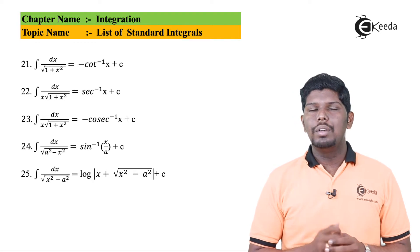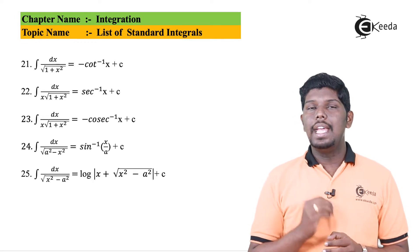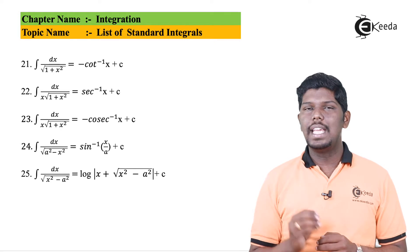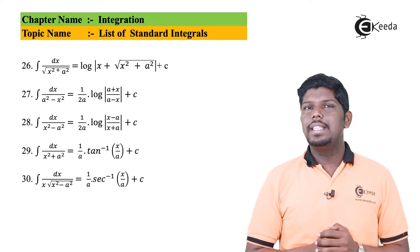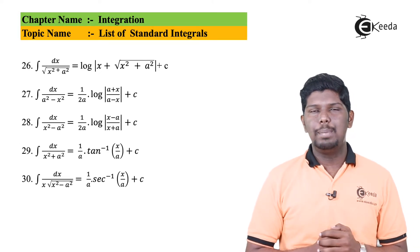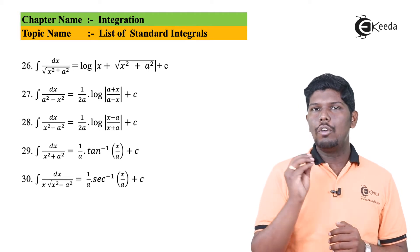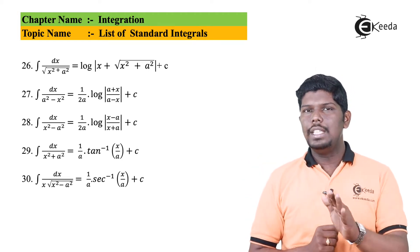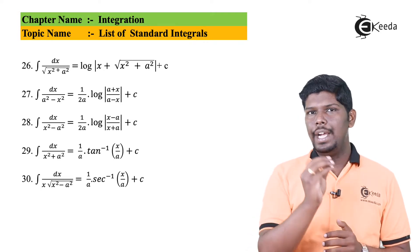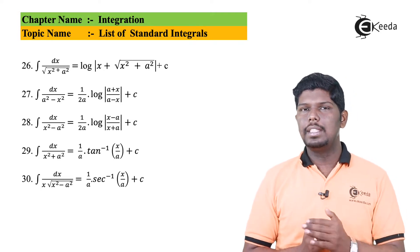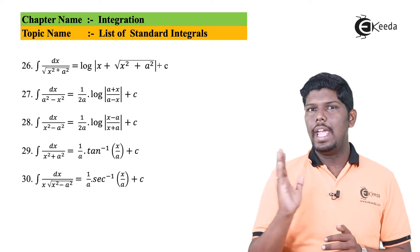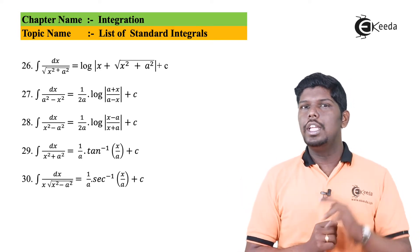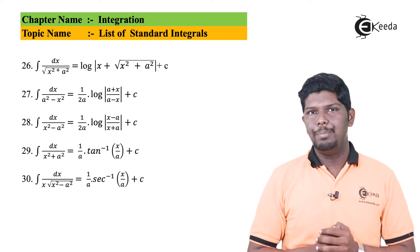Formula 24: integral of dx upon under root of a squared minus x squared gives sin inverse x by a plus c. The next formula, integral of dx upon under root of x squared plus a squared, gives log of x plus under root x squared plus a squared plus c. Changing the sign gives integral of dx upon under root of x squared minus a squared, which is log of x plus under root x squared minus a squared plus c. For these two, the format remains the same.